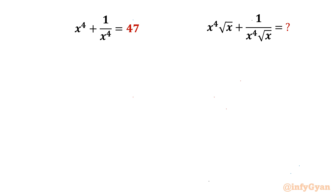Welcome back to Infigyan, my dear friends. In this video we have one very interesting and challenging question from algebraic expressions and equations. We have to evaluate x to the power 4 root x plus 1 over x to the power 4 root x, given that x⁴ + 1/x⁴ = 47. Let us get started by considering the expression equal to E.